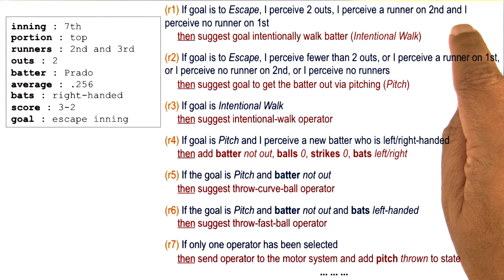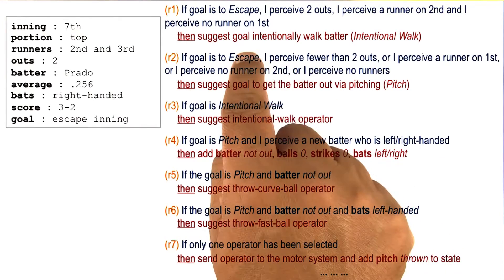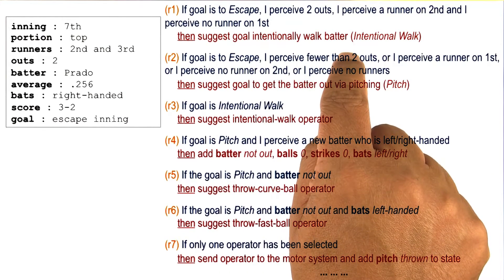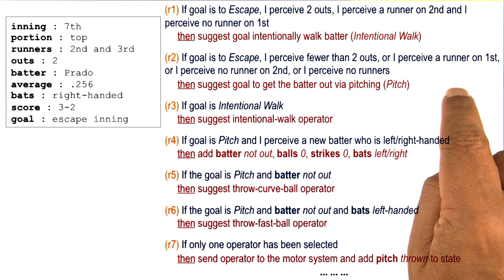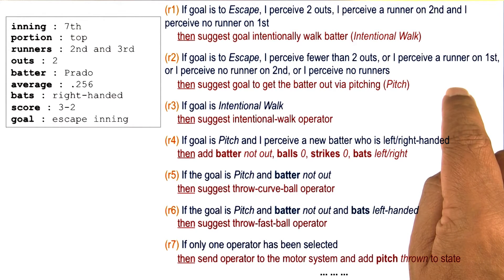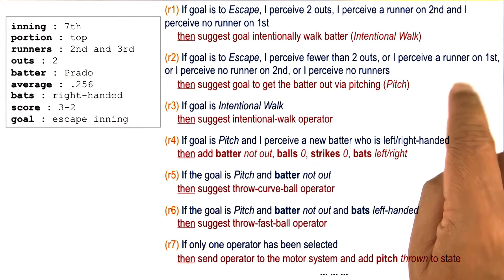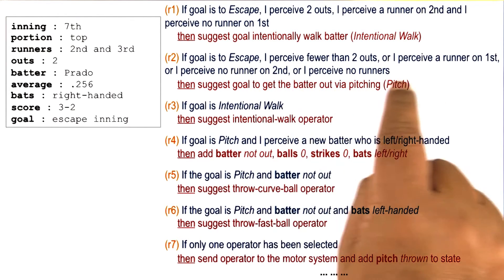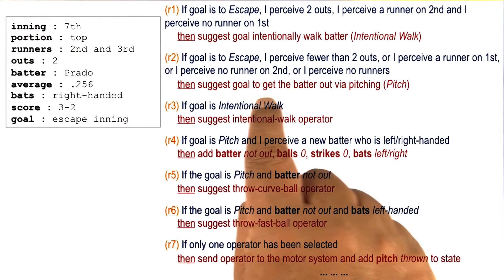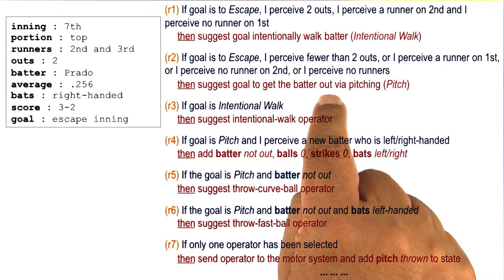If the goal is to escape, and I perceive two outs, and I perceive on the second, and I perceive a runner on the second, and I perceive no runner on the second, or I perceive no runners — then suggest the goal to get the batter out by pitching.